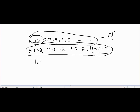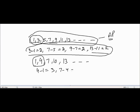Let's take one more example: 1, 4, 7, 10, 13. Here the difference between any two consecutive terms is equal to 3. Because 4 minus 1 equals 3, 7 minus 4 is also 3, and 13 minus 10 equals 3. Since the difference is constant, this sequence is also an AP.